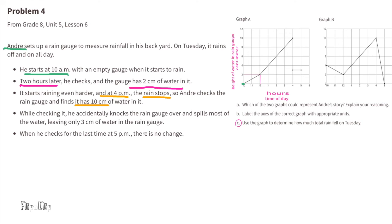It also mentions that it starts raining even harder at 4 p.m., then the rain stops, so Andre checks the rain gauge and finds it has 10 centimeters of water in it. Part c: Use the graph to determine how much total rain fell on Tuesday. Looking at the graph, at four o'clock there was a total of 10 centimeters of water in the gauge, so the total is 10 centimeters.